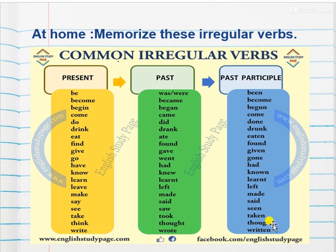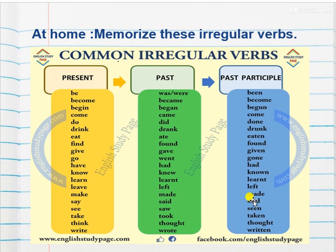Know/knew/known, learn/learned/learned, leave/left/left, make/made/made, see/saw/seen, take/took/taken, think/thought/thought, write/wrote/written. Some are the same in past simple and past participle — for example, 'think/thought/thought' and 'say/said/said'. Good luck, students. Please memorize them at home. See you next time!